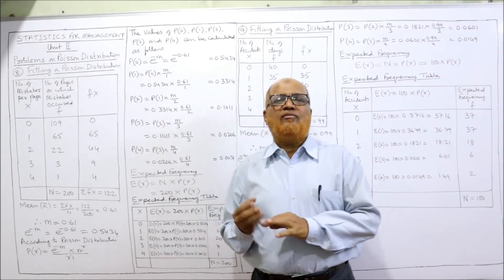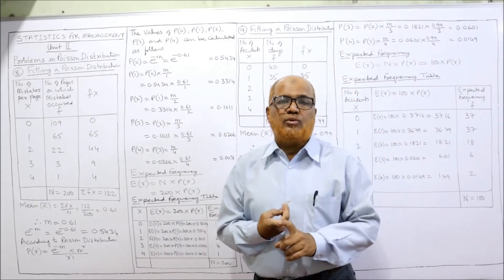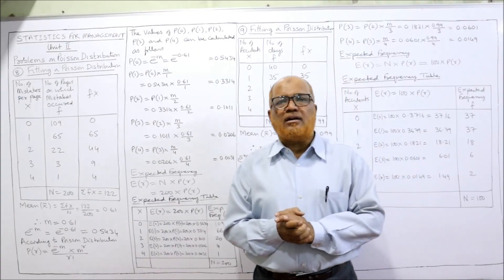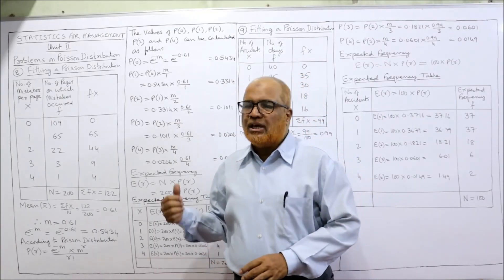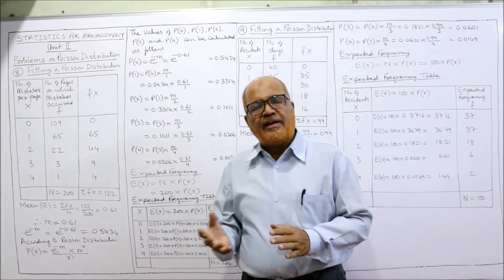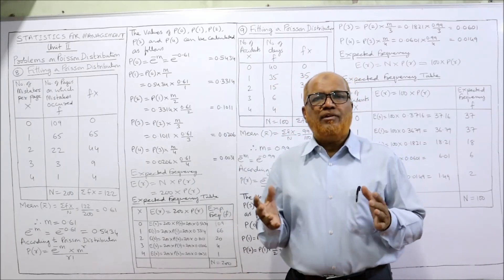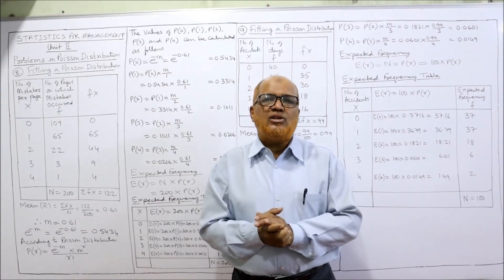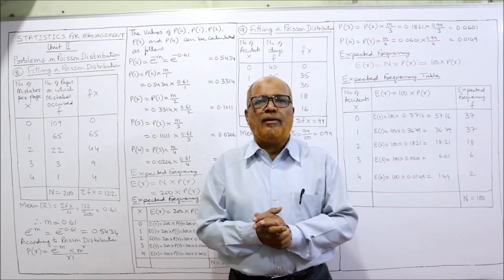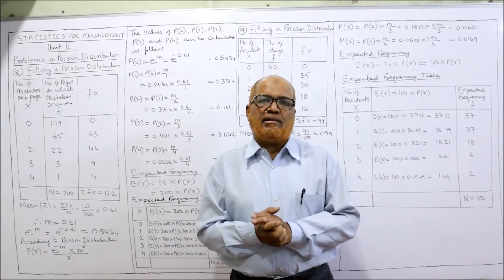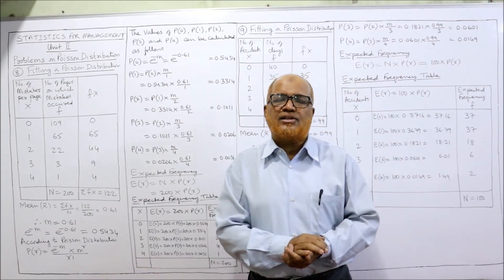In probability distribution we have three distributions: binomial distribution, Poisson distribution, and normal distribution. In the next video, I will start normal distribution, which is a continuous probability distribution. If you are satisfied with my lecture, give the video a like, share my channel among your groups and friends so more students can enhance their knowledge. Please give your comments, subscribe if you haven't yet, and support via Super Thanks.